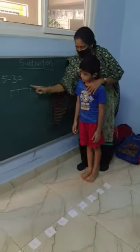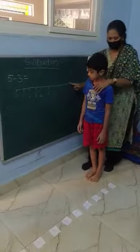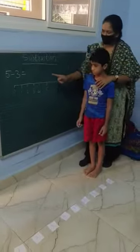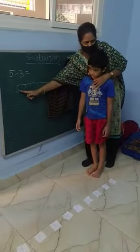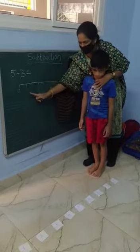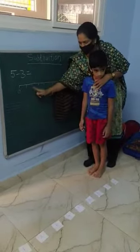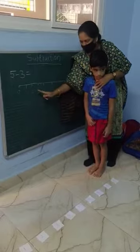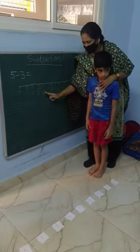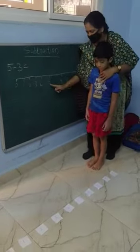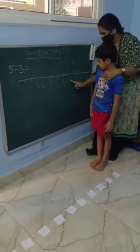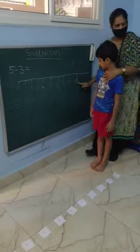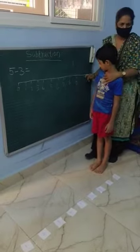So this is called the number line. It starts from 0: 1, 2, 3, 4, 5, 6, 7, 8, 9, 10, and so on.